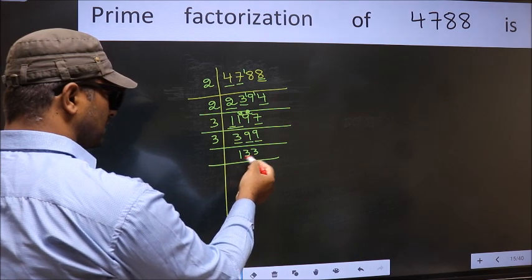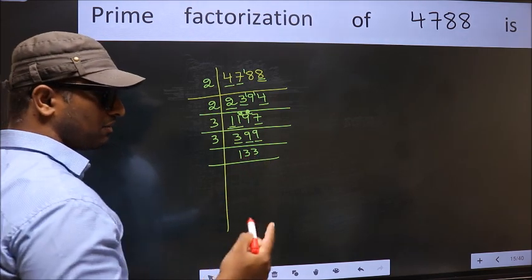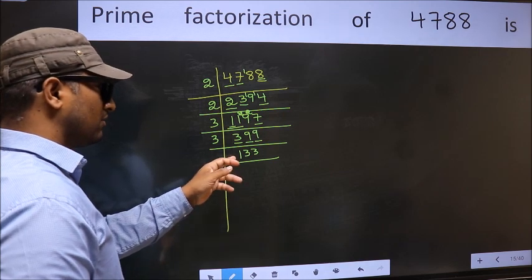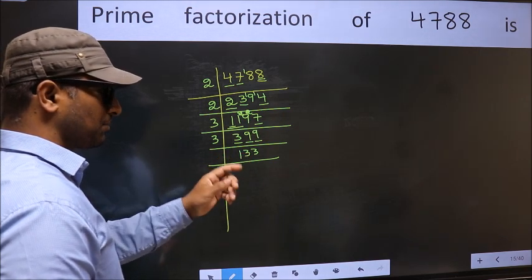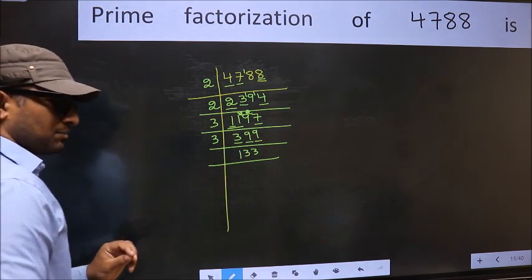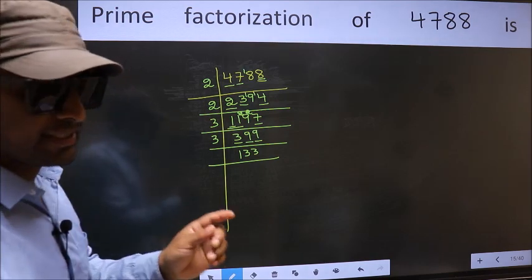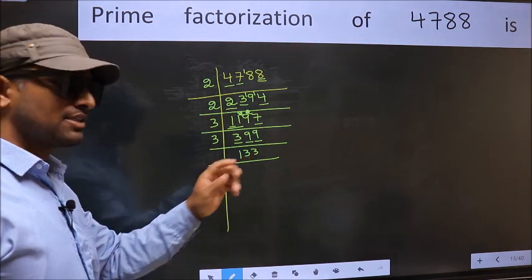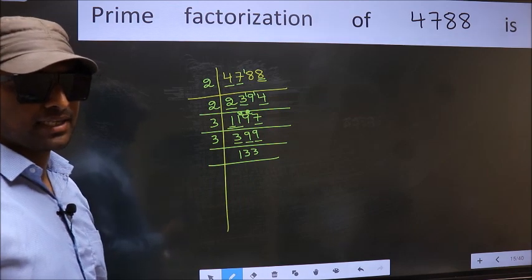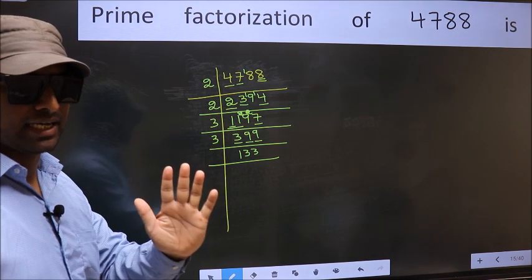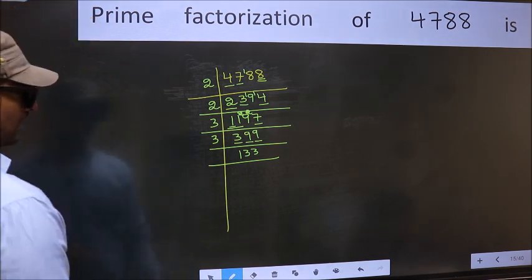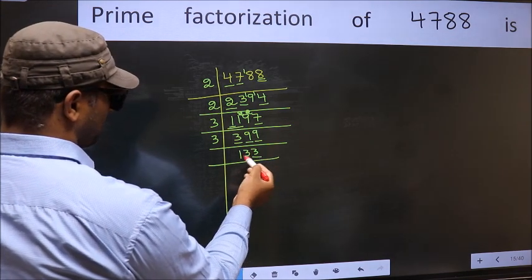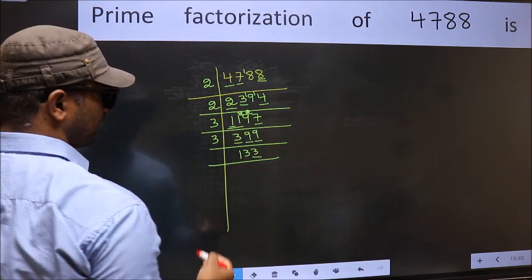Now to check whether it is divisible by 3 or not, add the digits: 1 plus 3 plus 3 equals 7, and 7 is not divisible by 3. So this number is also not divisible by 3. Next prime number 5. The last digit is neither 0 nor 5, so this is not divisible by 5.